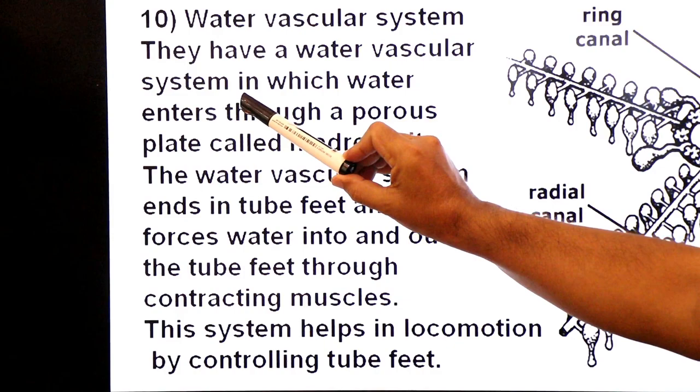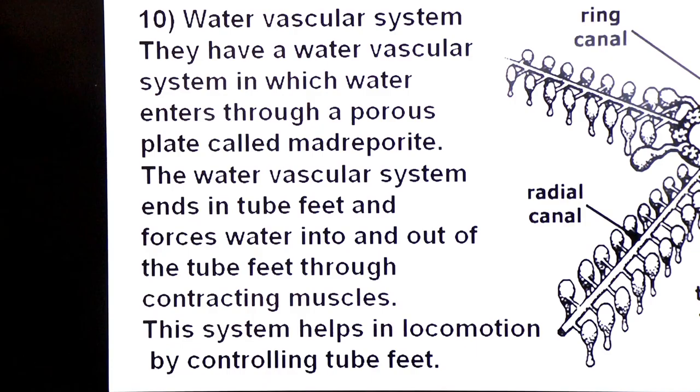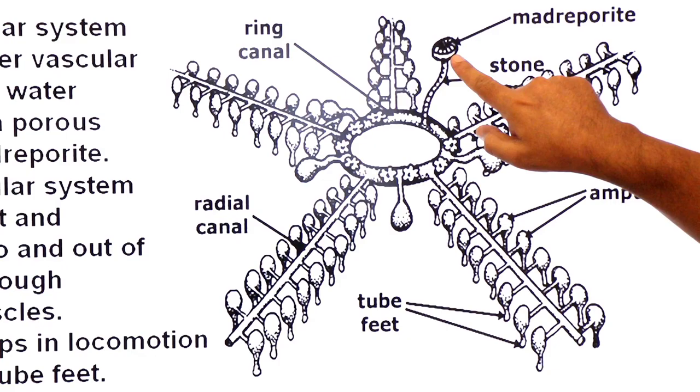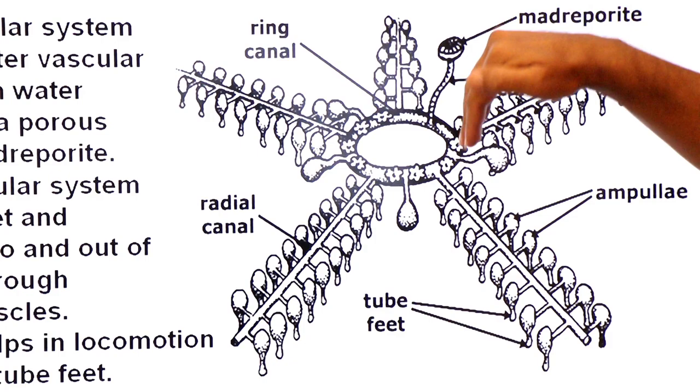They have water vascular system in which water enters through a porous plate called madreporite. Here, this is water vascular system of Echinodermata. Here see, like a sieve plate, madreporite for water intake.